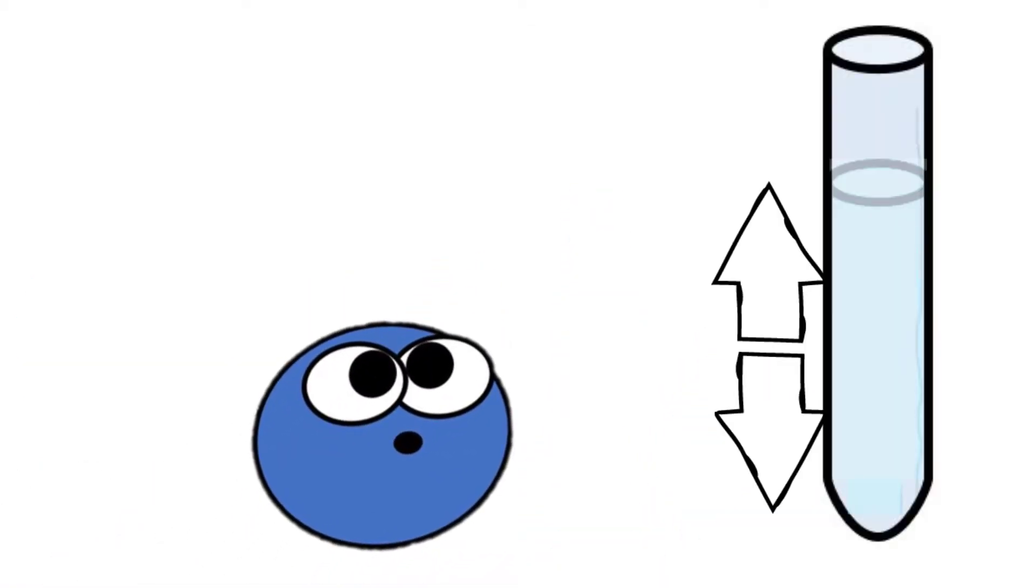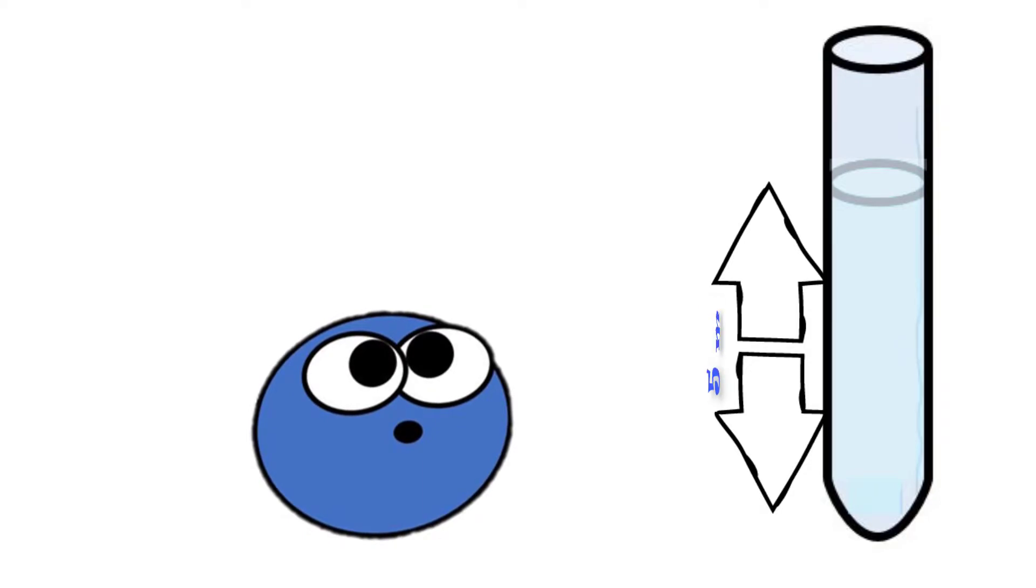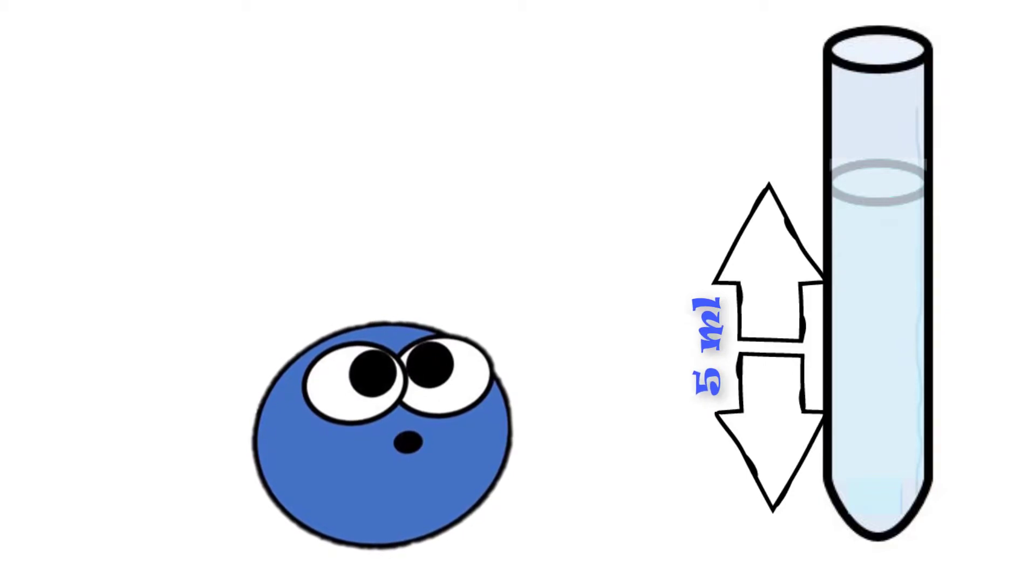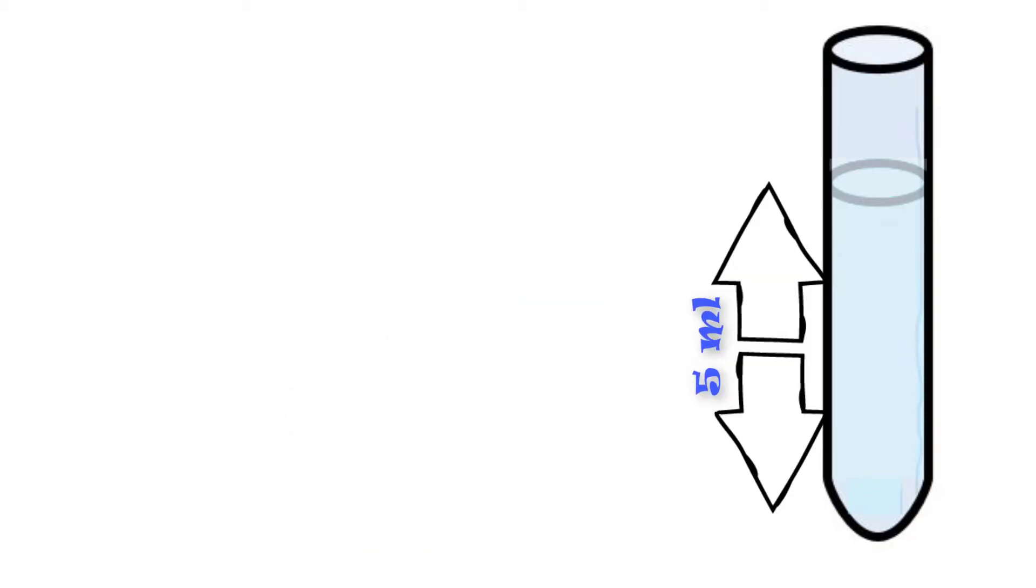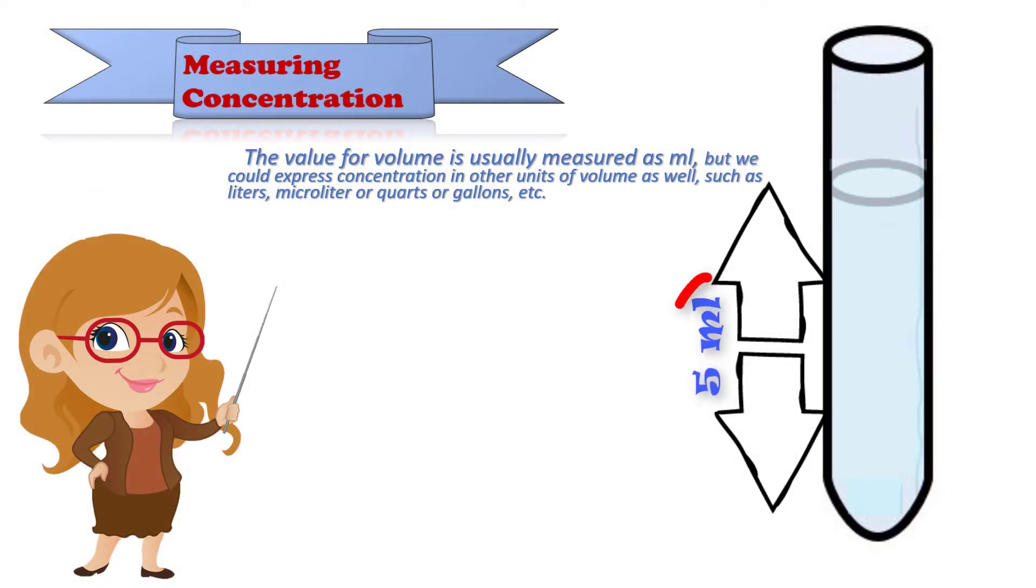For example, let's say we have 5 milliliters of solution, which would translate to 5 milliliters of solvent, or 5 milliliters of nutrient-rich broth. So the units we will use for our bottom number in our concentration is simply mL, or milliliters.